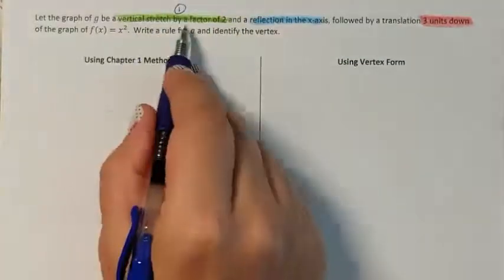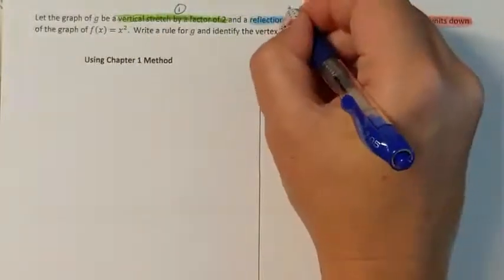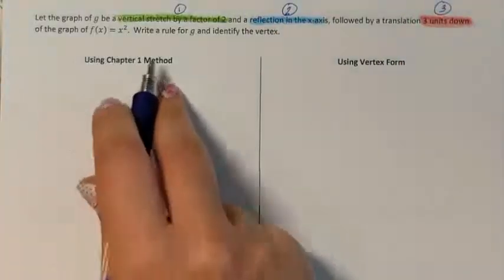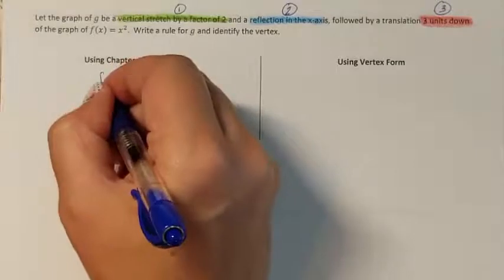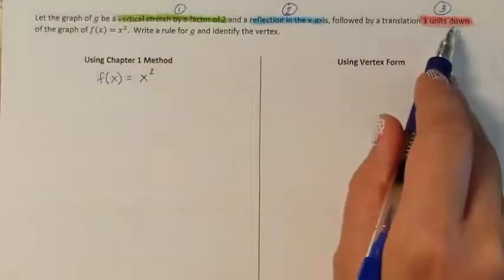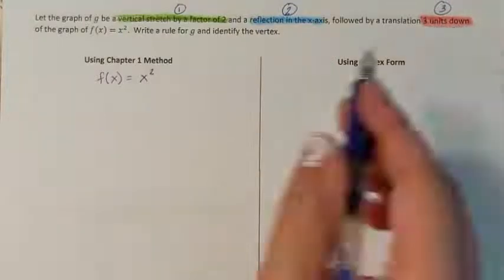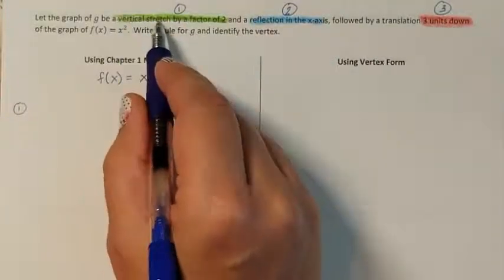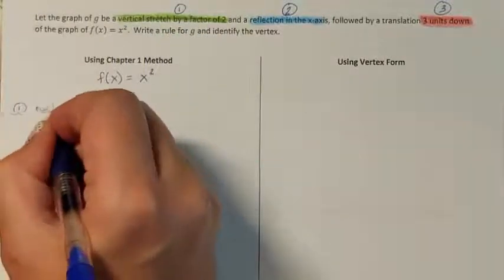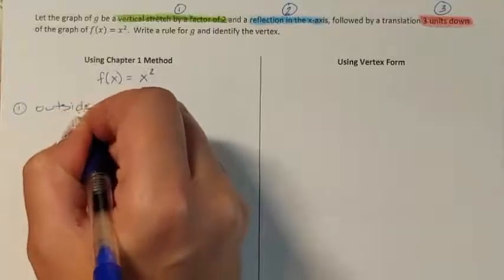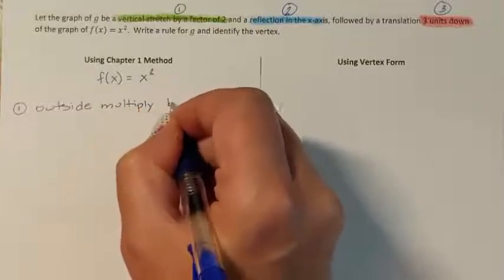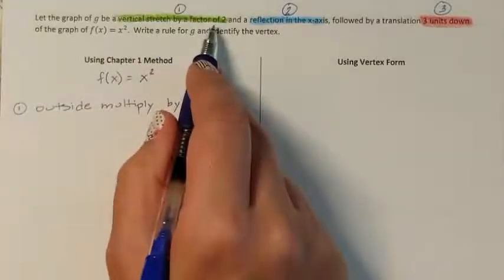Step 1: vertically stretch first. Step 2: do a reflection. Step 3: move down. Using our Chapter 1 skills, we start with the f(x) parent function and apply three transformations. For transformation number 1, a vertical stretch by a factor of 2 — vertically stretching is an outside multiply move — so on the outside we multiply by 2.